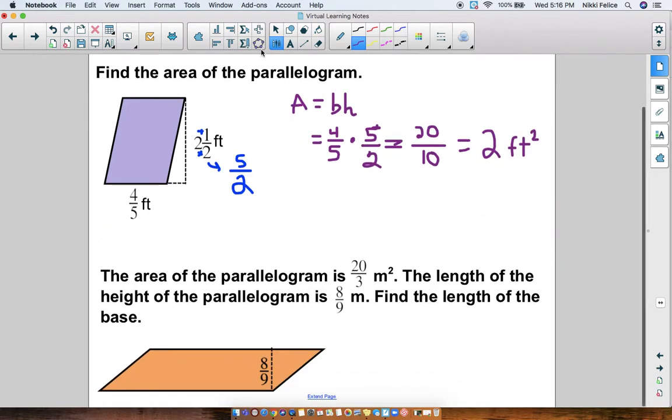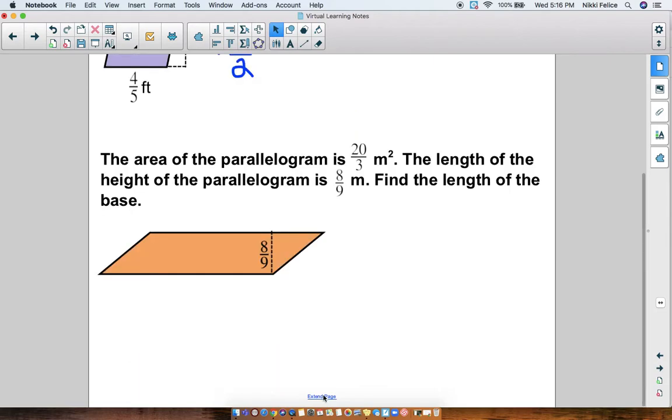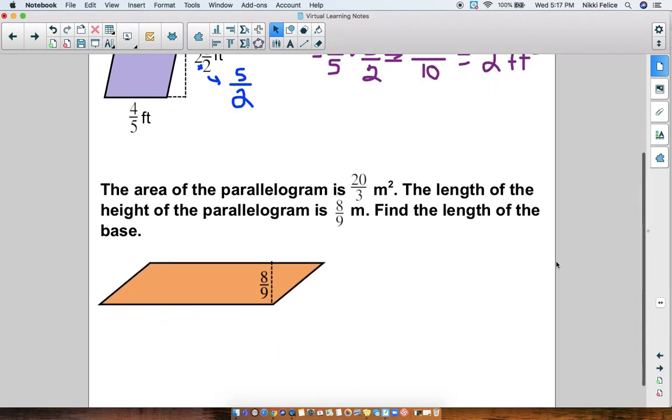Let's do another one with fractions, except this time I'm being told the area and you have to try to figure out the base. The area of the parallelogram is 20 thirds meters squared, or 20 over three meters squared. The length of the height of the parallelogram is eight ninths meters. I need to find the length of the base. Just like we know how to do, we are going to plug in what we know. So we know our formula is base times height.